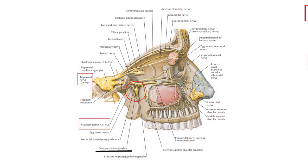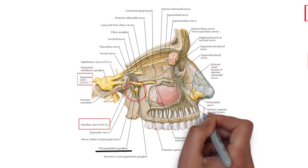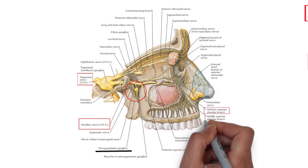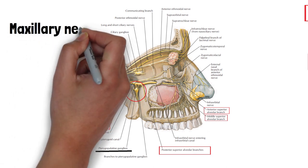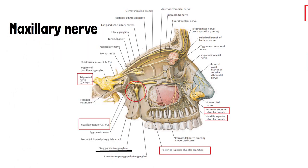Remember, these three nerves don't supply the maxillary teeth. The maxillary teeth are supplied by the anterior, middle, and posterior superior alveolar nerves, which originate either directly or indirectly from the maxillary nerve of the trigeminal nerve. So although the main branch of all these nerves is common — the maxillary nerve — the subsequent branches of innervation are different for the gingiva and different for the maxillary teeth.